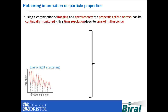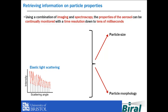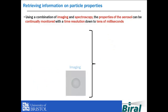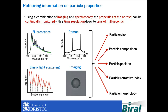Using elastic light scattering, the particle size and particle morphology can be determined, and using imaging, the particle position and particle morphology can be found. A combination of techniques can be used simultaneously to give the full range of particle properties.